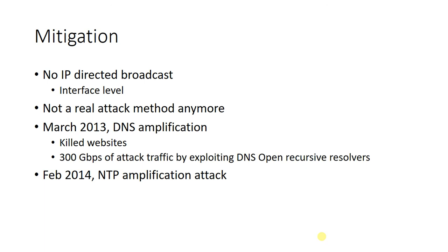Now, are we susceptible to this type of attack today? No, not really. We can mitigate it easily on our routers by using the 'no IP directed broadcast' command on the interface. It is not really an attack method anymore because that is the default configuration for many routers. However, there are other reflection and amplification attacks we have seen since then. In March 2013, there was a DNS amplification attack that generated 300 gigabits per second of attack traffic because it exploited DNS open recursive resolvers.